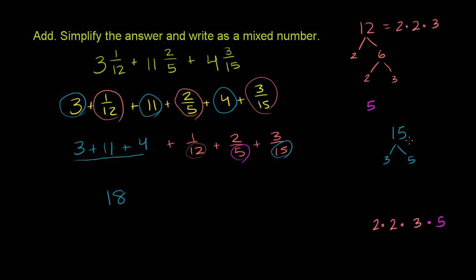We already have a 3 from the 12, and we already have a 5 from the 5. So this number will be divisible by all of them.